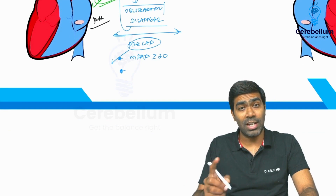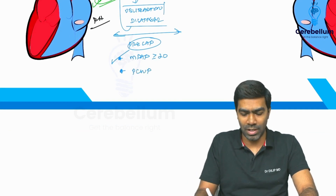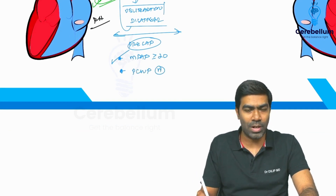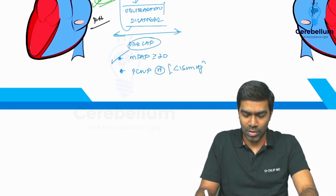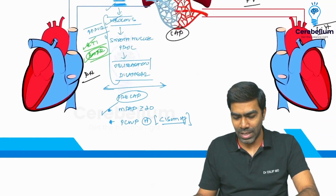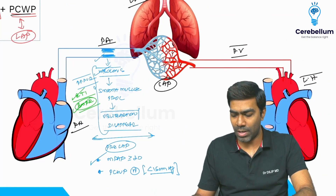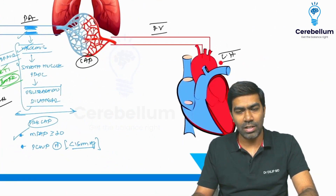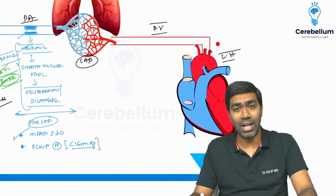To confirm it is precapillary, you look at the pulmonary capillary wedge pressure — it will be normal, typically less than 15 mmHg. Why? Because it is a precapillary problem, a problem of pulmonary arterioles. The left heart is functioning well, so PCWP is normal. PCWP is an indirect measurement of left atrial pressure, and it only elevates with left heart problems.